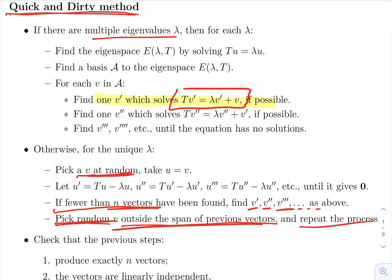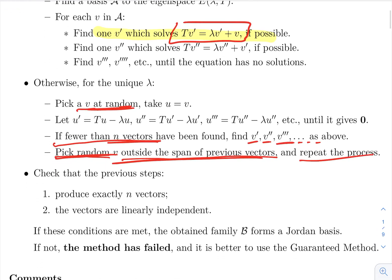Then you repeat this process. This may or may not work. In the end, if this process gave you exactly n vectors and they are linearly independent, they will be a Jordan basis by construction.